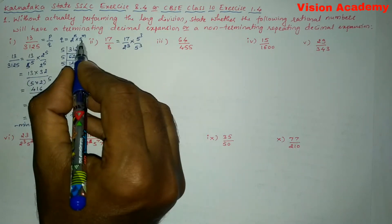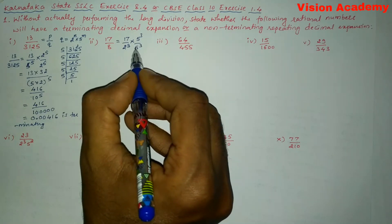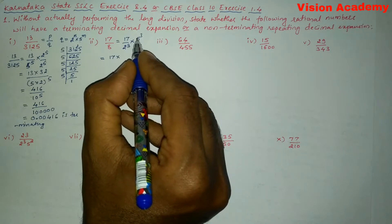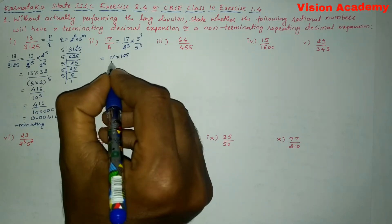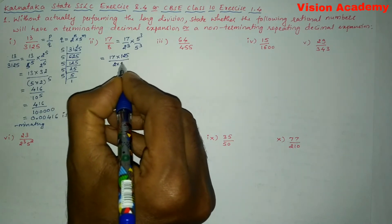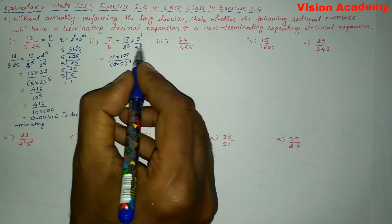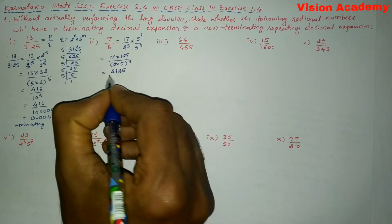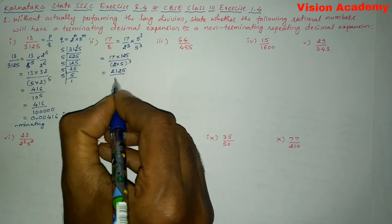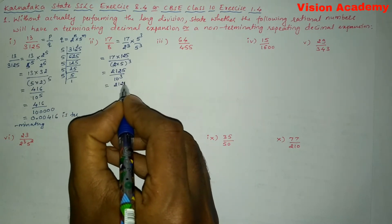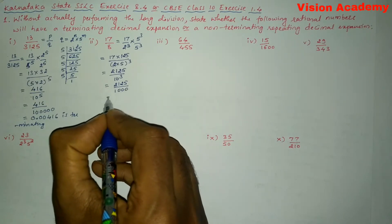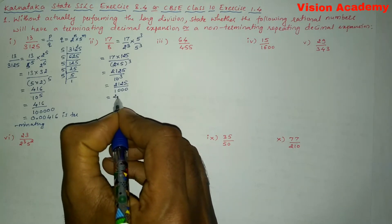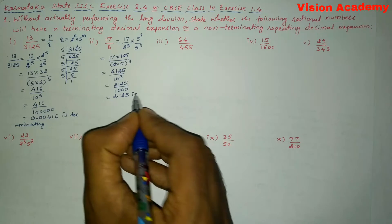In order to match the expression, we write 5 to the power 3 divided by 5 to the power 3. Simplifying: 17 into 5 to the power 3 is 17 into 125, which gives 2,125, divided by 2 into 5 whole to the power 3, which is 10 to the power 3. Shifting the decimal point three places gives us 2.125. This is a terminating decimal.